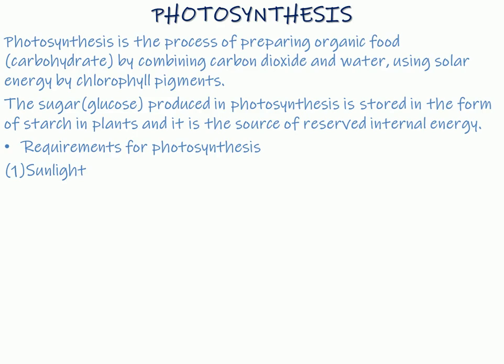Sun energy is the primary source of energy to begin the process of photosynthesis. Second, photosynthetic pigments. These are chlorophyll which are responsible for absorbing light energy. Photosynthetic pigments are present in all green parts of the plant.